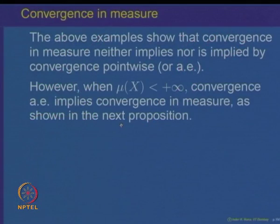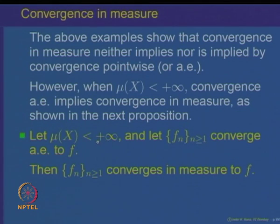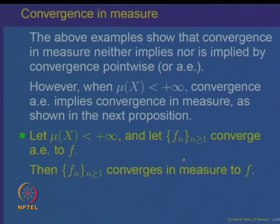However, when the underlying space has finite measure, one can draw conclusions. In probability theory the underlying measure space has total mass 1. We want to prove that if mu(X) is finite and F_n converges to F almost everywhere, then F_n also converges to F in measure. Let us look at a proof of this fact.